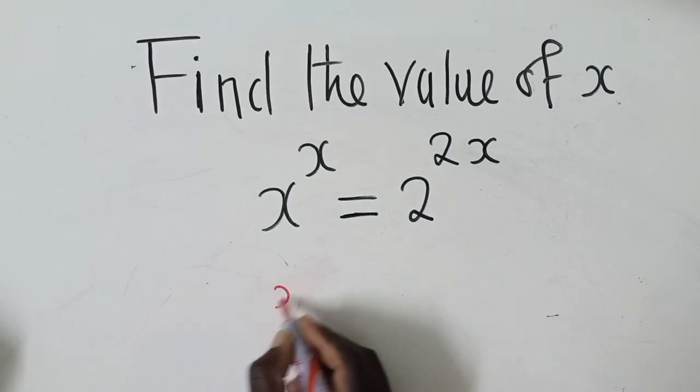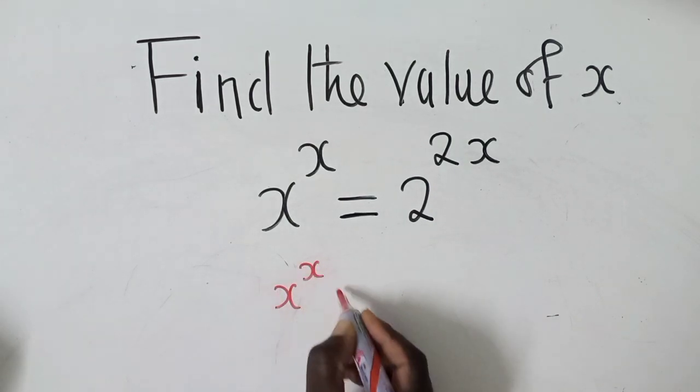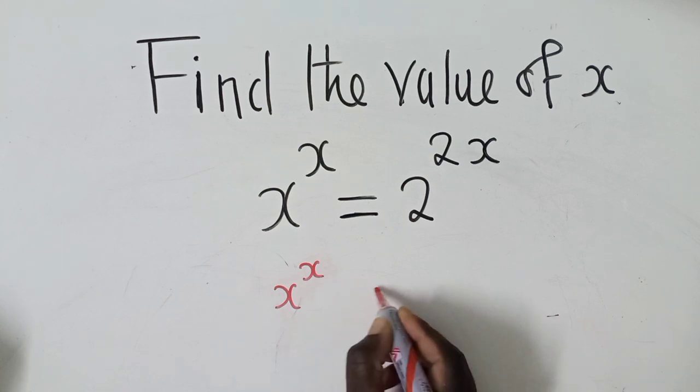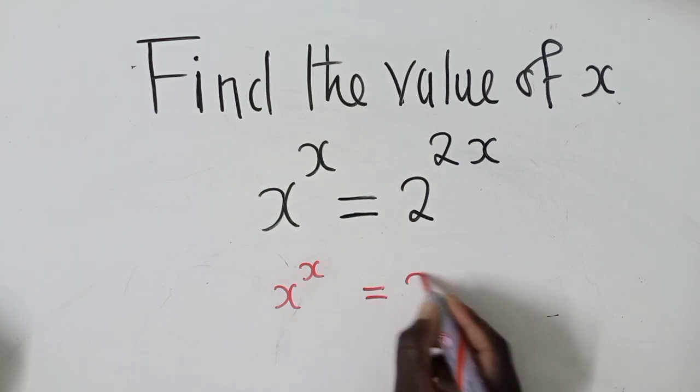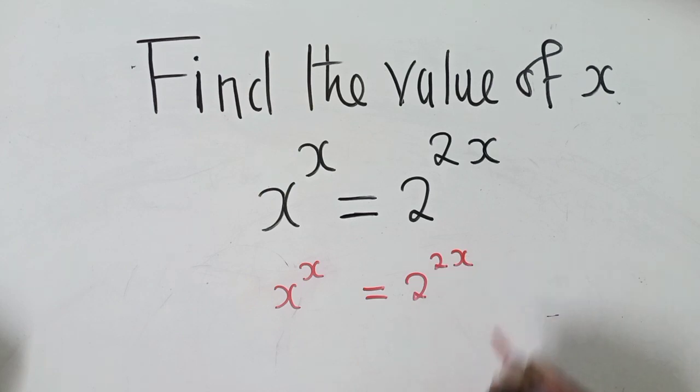Alright, so what we're going to do is to just say x power x. We leave a little bit of some space is equal to 2 power 2x there. So after we do this,